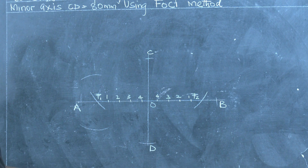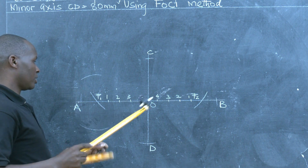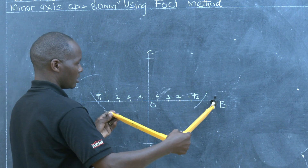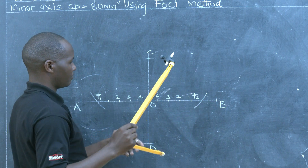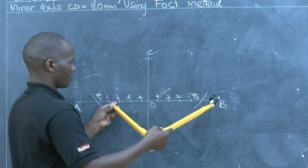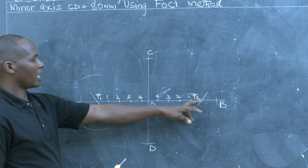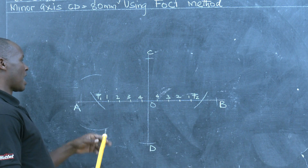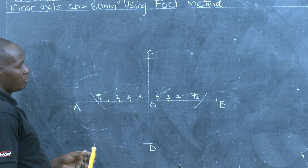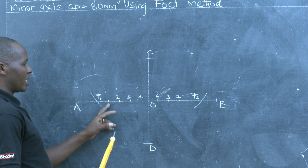Then we will get radius B1. Using F2 as the center, we will describe other arcs to cut the previous ones made with radius A1.